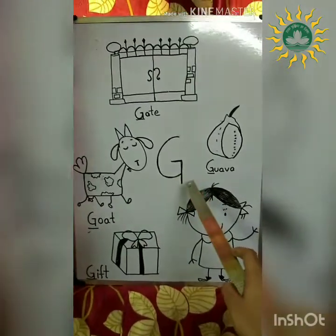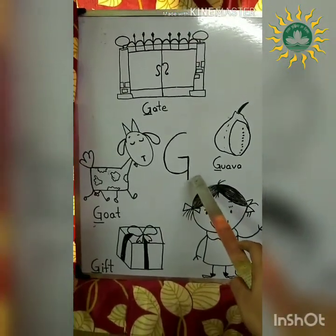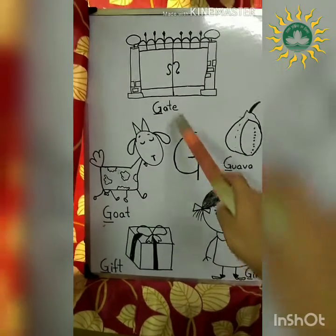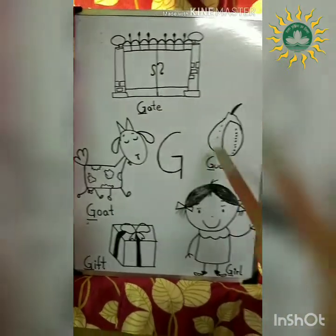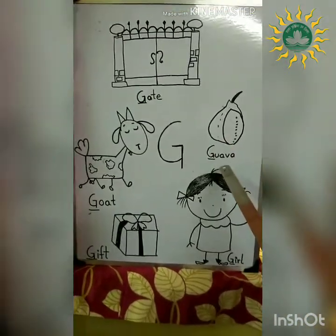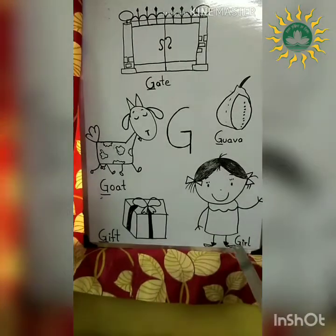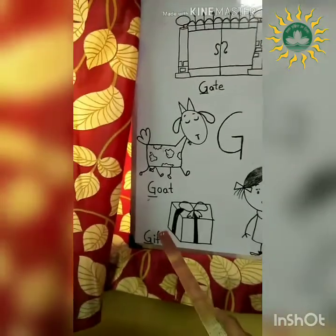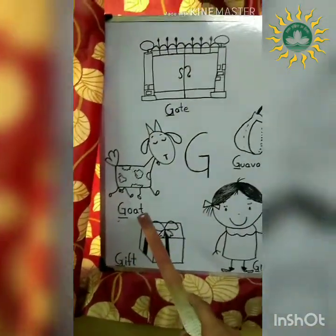The phonic sound of letter G is — G. Gate — G. Guava — G. Girl — G. Gift — G. Goat — G.